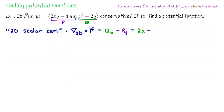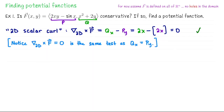Let's compute dQ/dx — that is 2x. Then we need to subtract off dP/dy, which is also 2x. So the 2D scalar curl of this vector field is zero, which means that this vector field is conservative. Notice if dQ/dx minus dP/dy is zero, that means Q_x equals P_y — so it's just a rephrasing of that test.